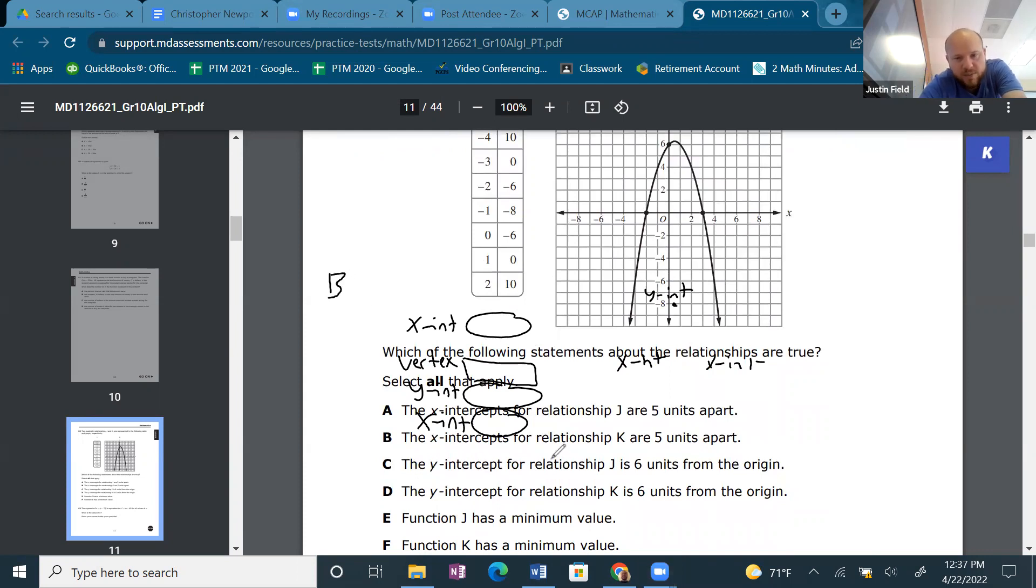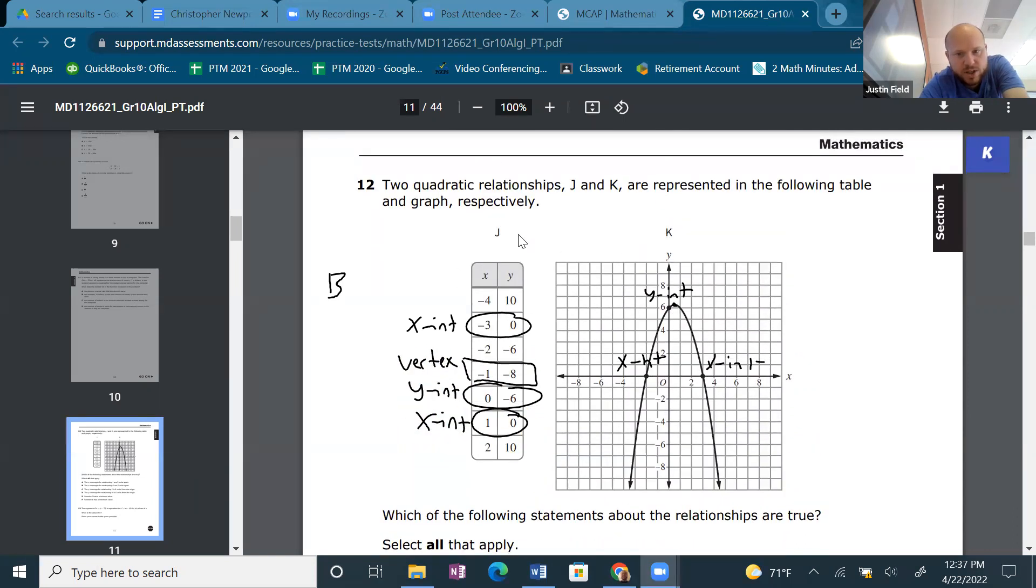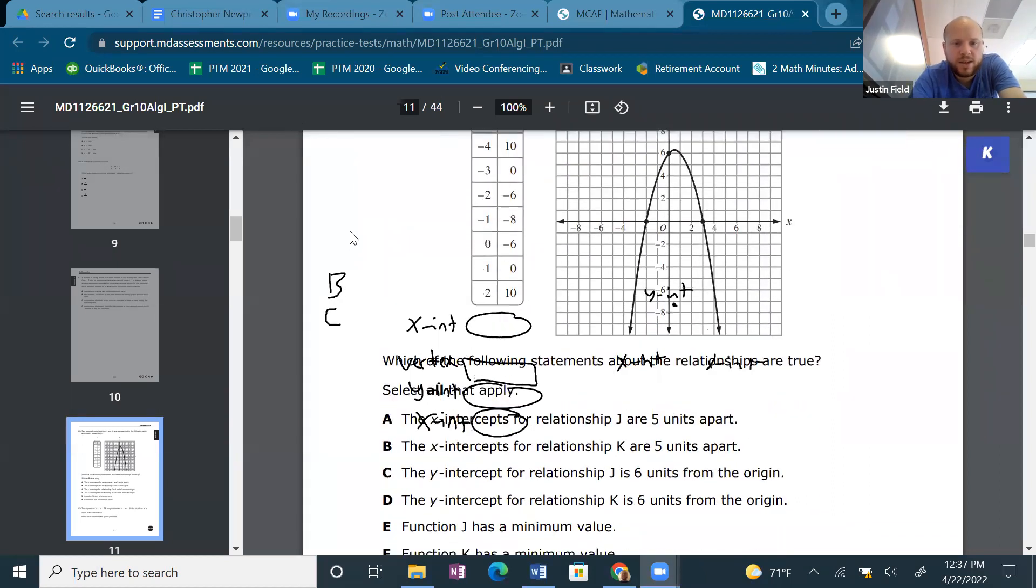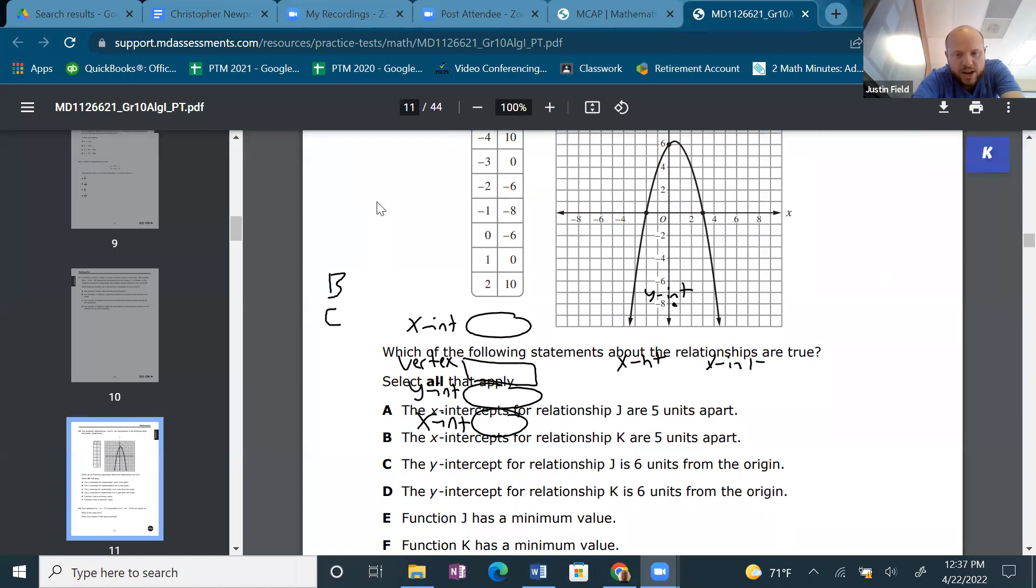C, the y-intercept for the relationship J is 6 units from the origin. Where is the relationship J? K, where are you relationship J? 6 units from the origin. Yes. The y-intercept is -6. That is 6 units from the origin. D, the y-intercept for the relationship K is 6 units from the origin. Yes, the K has 6 units from the origin as well. Positive 6.